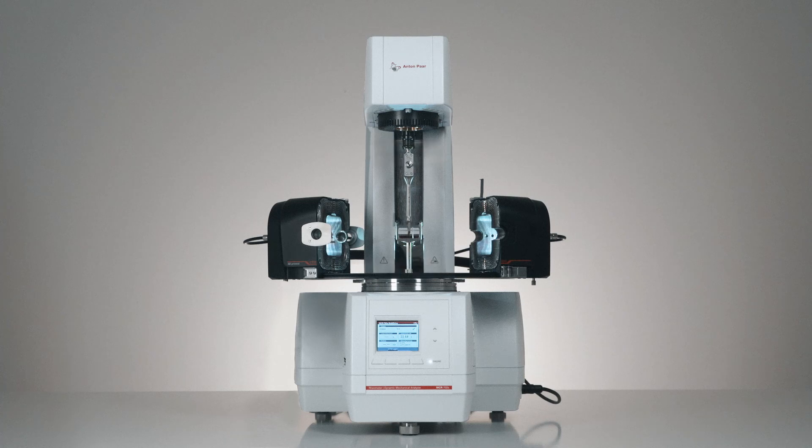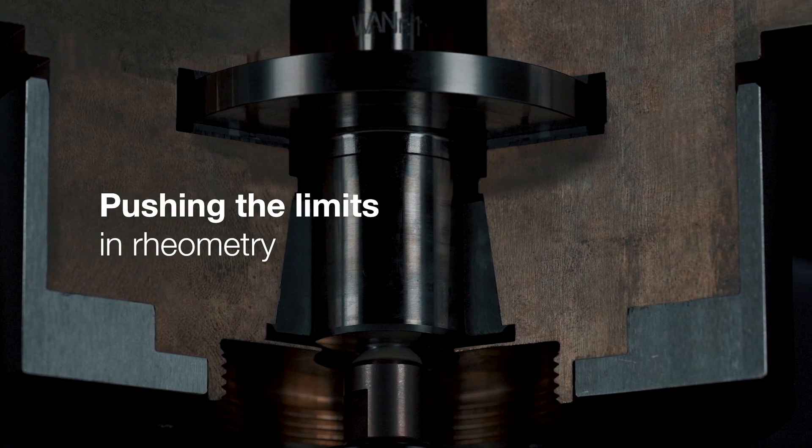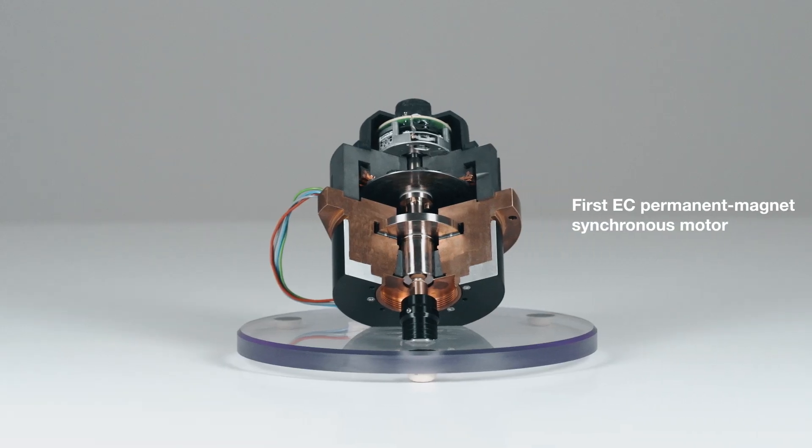Anton Parr was already pushing the limits in rheometry back when we invented the first EC permanent magnet synchronous motor.